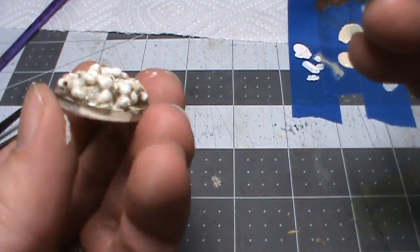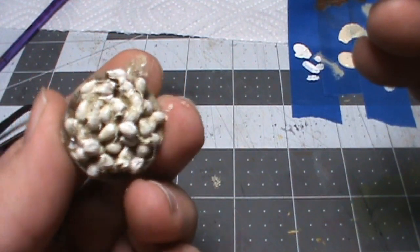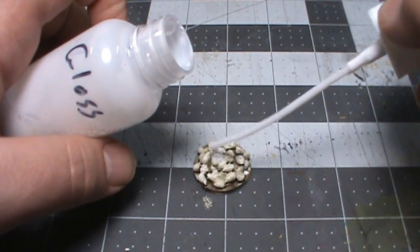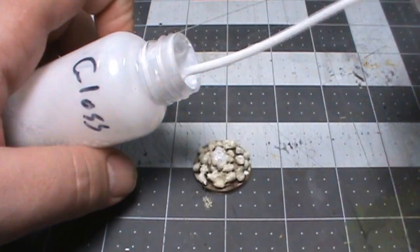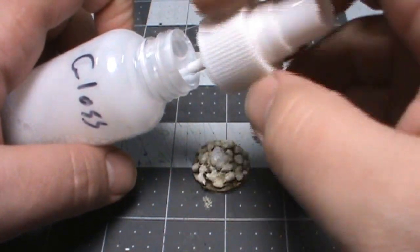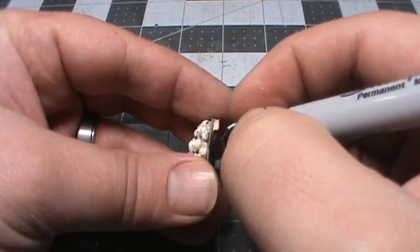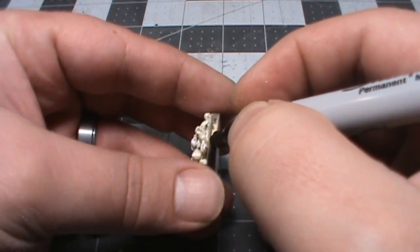Then once that's dry we're going to use the hose from the sprayer to just sort of dropper the gloss stuff on just a little bit. You don't need to get crazy with this. Just make it a little bit shiny so it looks wet. And I just colored the edge of my base with a sharpie because it's easier.